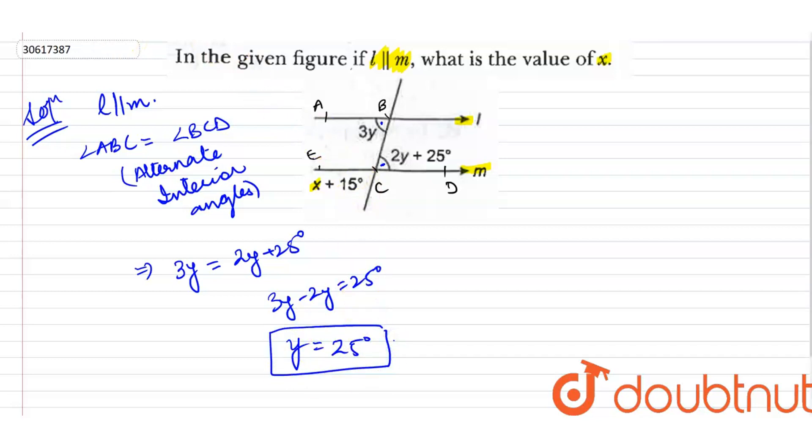Now I can say that this angle, which is vertically opposite, is equal to 2Y plus 25 degrees.